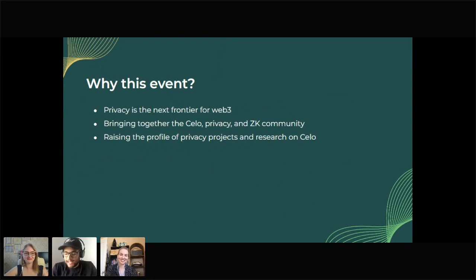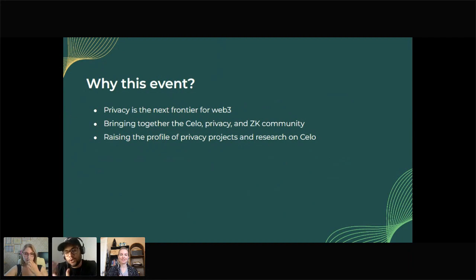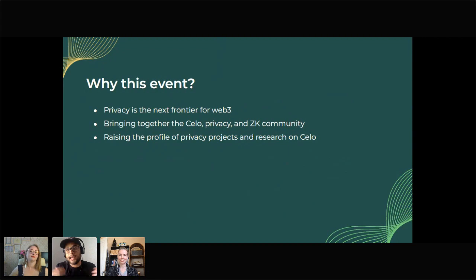For web3 to reach mass adoption, there are two main milestones: building products that are better than what's out there on web2, and having privacy by default. Right now, blockchains are pseudonymous but not private — your information is out there on the chain, available for everyone to look at. We do these types of events in the networks we work with to promote privacy and showcase the work being done by many teams and builders.